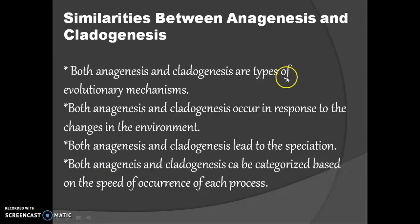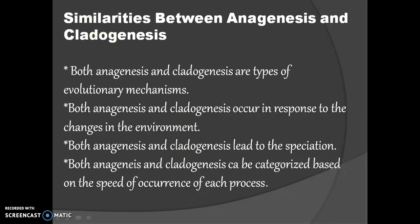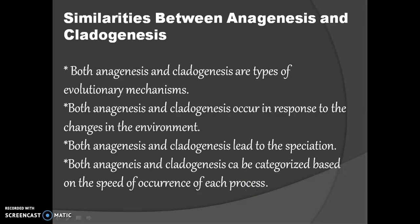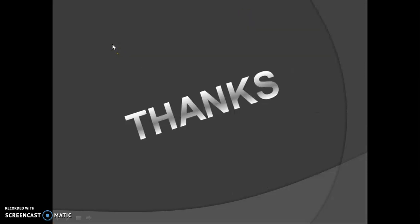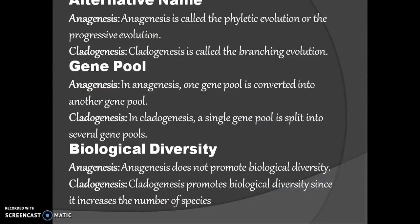Now for similarities between anagenesis and cladogenesis — although they are antagonistic, they share commonalities. Both are types of evolutionary mechanism. Both occur in response to changes in the environment. Both lead to speciation — new species form in both, though in anagenesis the parental species becomes extinct while in cladogenesis the parental species persists alongside new species. Both can be categorized based on the speed of occurrence. Anagenesis is less common while cladogenesis is more common.